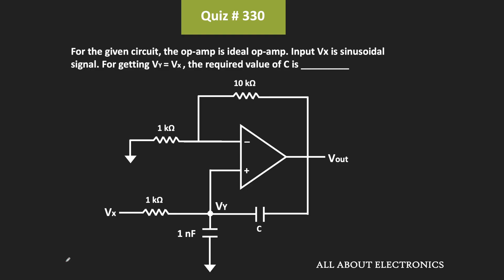Hey friends, welcome to the YouTube channel All About Electronics. So in this question, we have been given this op-amp circuit. For the given circuit, we have been asked to find the value of this capacitor C such that this voltage Vx is equal to Vy. The op-amp is the ideal op-amp and we have been given that Vx is a sinusoidal signal.